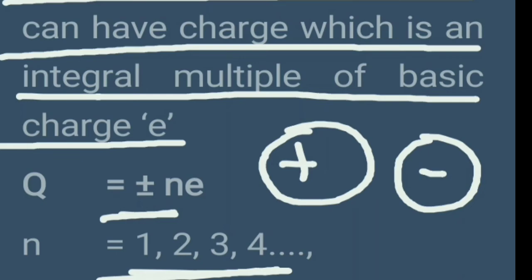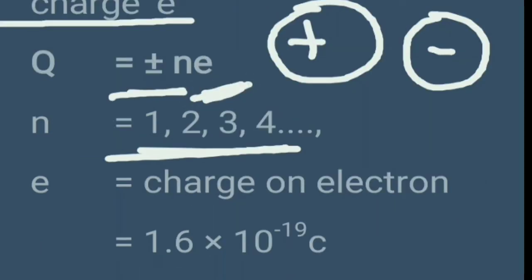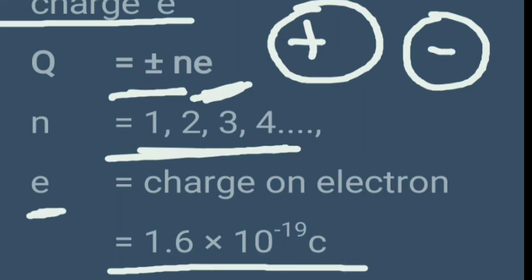Previous section में हम पढ़ चुके हैं — अगर नहीं पता तो आप मेरे previous videos देख सकते हैं। Charge e की value है 1.6 × 10⁻¹⁹ coulomb। Proton हो या electron — positive charge हो या negative charge हो — charge की magnitude same रहेगी। So let us take another example regarding quantization of electric charge।